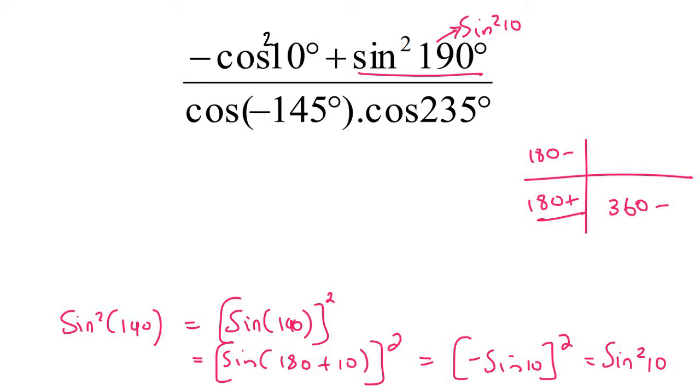The next one will be cos of negative 145. Now, remember that when it's not on the CAST diagram, so if it doesn't fit between 0 and 360, then you are allowed to add or subtract 360 as many times as you need to. And so what I'm going to do is I'm going to add 360 degrees to this.